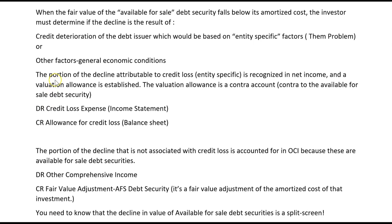Or is the decline in value the result of other factors like general economic conditions — not entity specific? The portion of the decline attributable to credit loss — the entity-specific portion — is recognized as a loss in net income. That means the income statement will absorb that loss, and a valuation allowance will be established for that amount. The valuation allowance is a contra account, contra to the available-for-sale debt security.